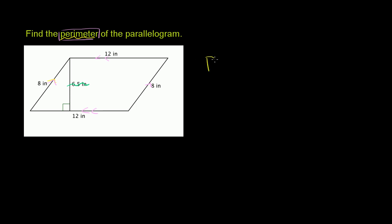So the perimeter of this parallelogram is going to be 12 inches plus 8 inches plus 12 inches plus 8 inches. 12 plus 8 is 20, and 12 plus 8 is 20.